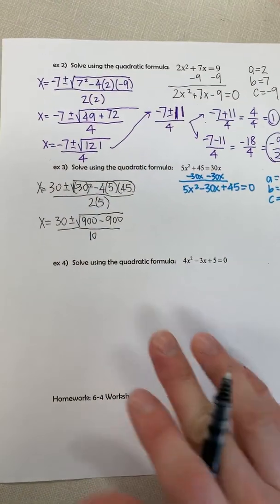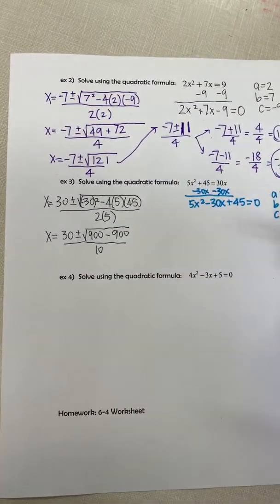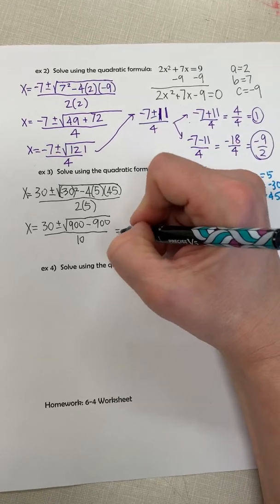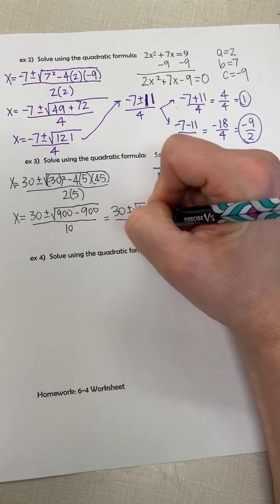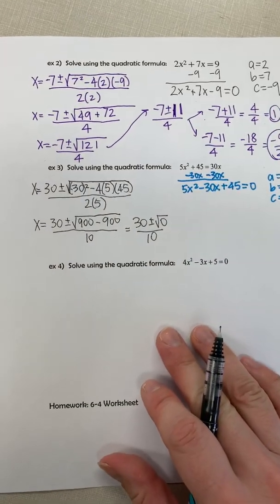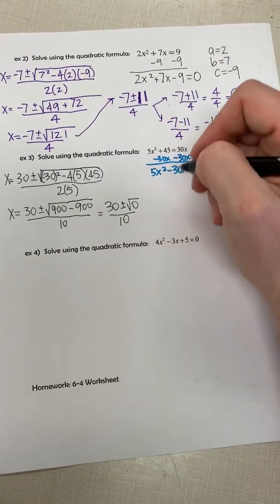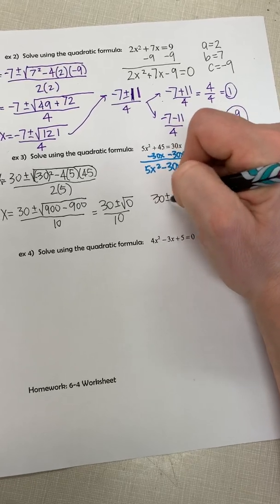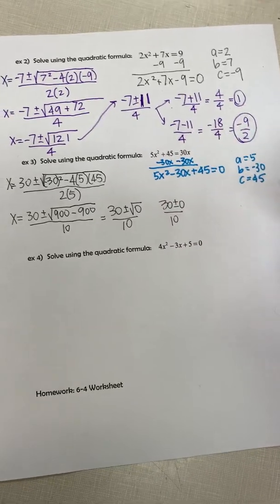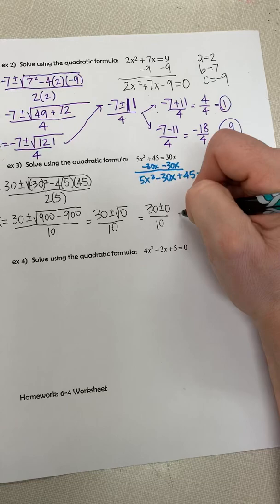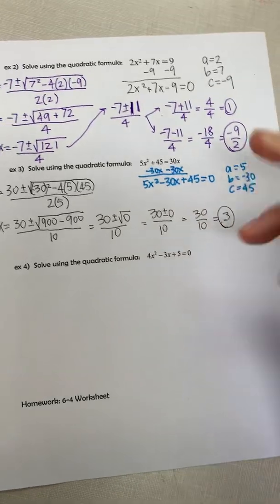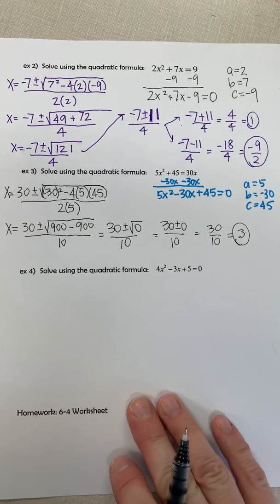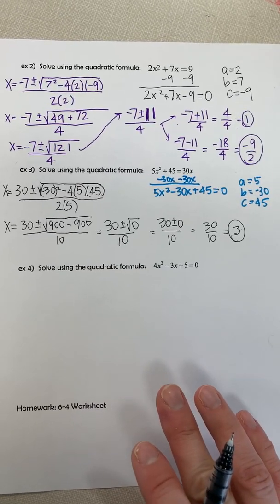So this one's a little bit different. This one, 900 minus 900 is 0. And we're going to take the square root of 0, which hopefully you know is just 0. So really, 30 plus or minus 0 doesn't really do anything. So it's just going to be 30 over 10. So this answer is just going to be 3. That one works a little bit more nicely there.